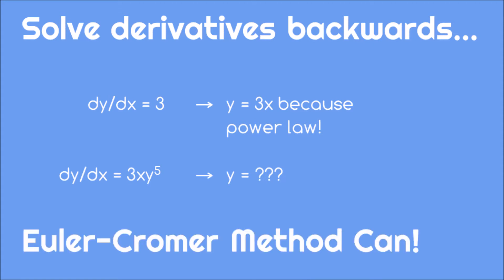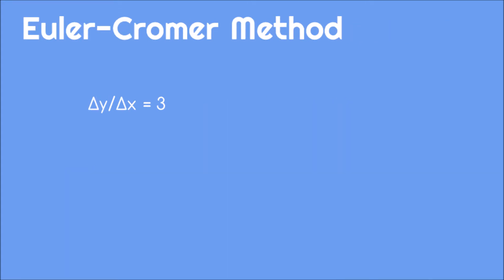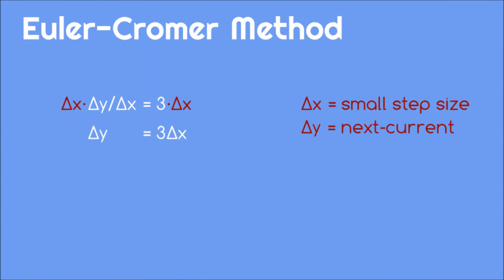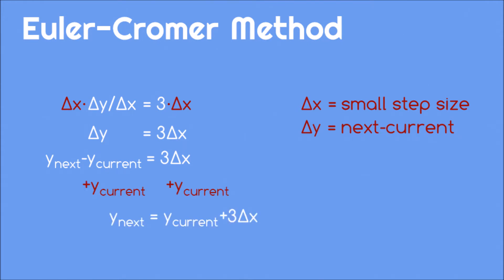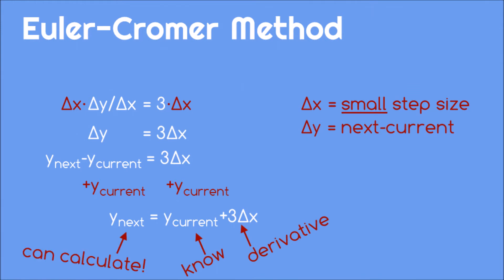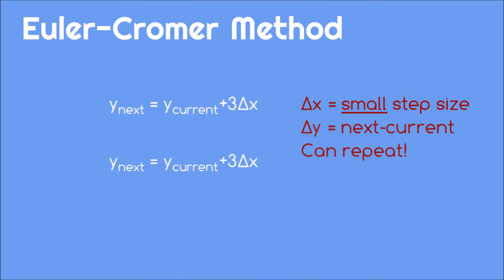That's why we have the Euler-Cromer method to get a computer to do the solving for us. Here's how it works. We turn the derivative back into a slope formula, then multiply by the change in x, which we make into a small number called the step size. Then we split the change in the function into its next value minus its current value, and add the current value to the other side. We now have an equation that says: if we know the current value of the function, have an expression for the derivative, and a small step size, we can calculate the next value. We can repeat this process as many times as we'd like, as long as our step size is small.